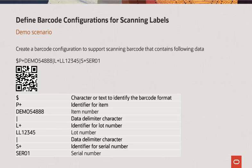In this demo, I will show how to create a new barcode format to support scanning a custom barcode. In this example, the $ character is used to identify the barcode format. P+ is used to indicate that the encoded data is an item number. L+ is used to indicate that the encoded data is a lot number. S+ is used to indicate that the encoded data is a serial number. And the vertical bar is used as a delimiter to indicate the end of value for each data element.